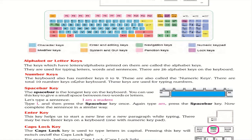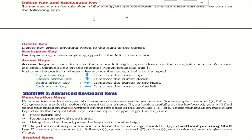Sometimes we make mistakes while typing. To erase them we can use the Delete key or Backspace. The Delete key erases anything typed to the right of the cursor, and Backspace erases anything typed to the left of the cursor.